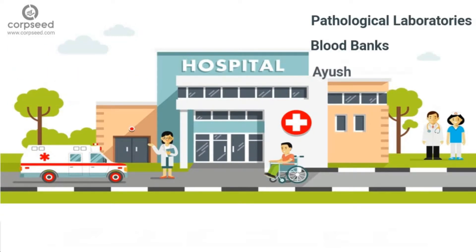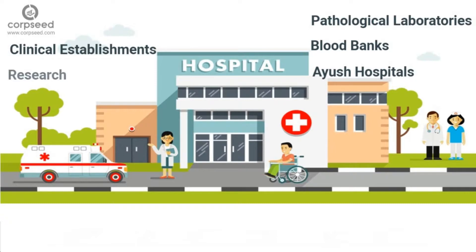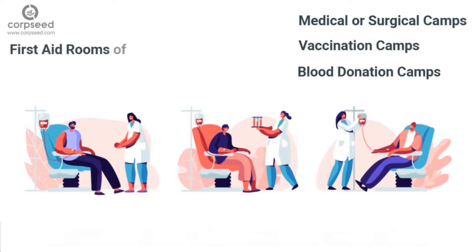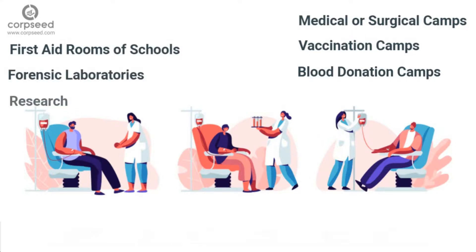The rules also apply to blood banks, AYUSH hospitals, clinical establishments, research or educational institutions, health camps, medical or surgical camps, vaccination camps, blood donation camps, first aid rooms of schools, forensic laboratories and research labs.